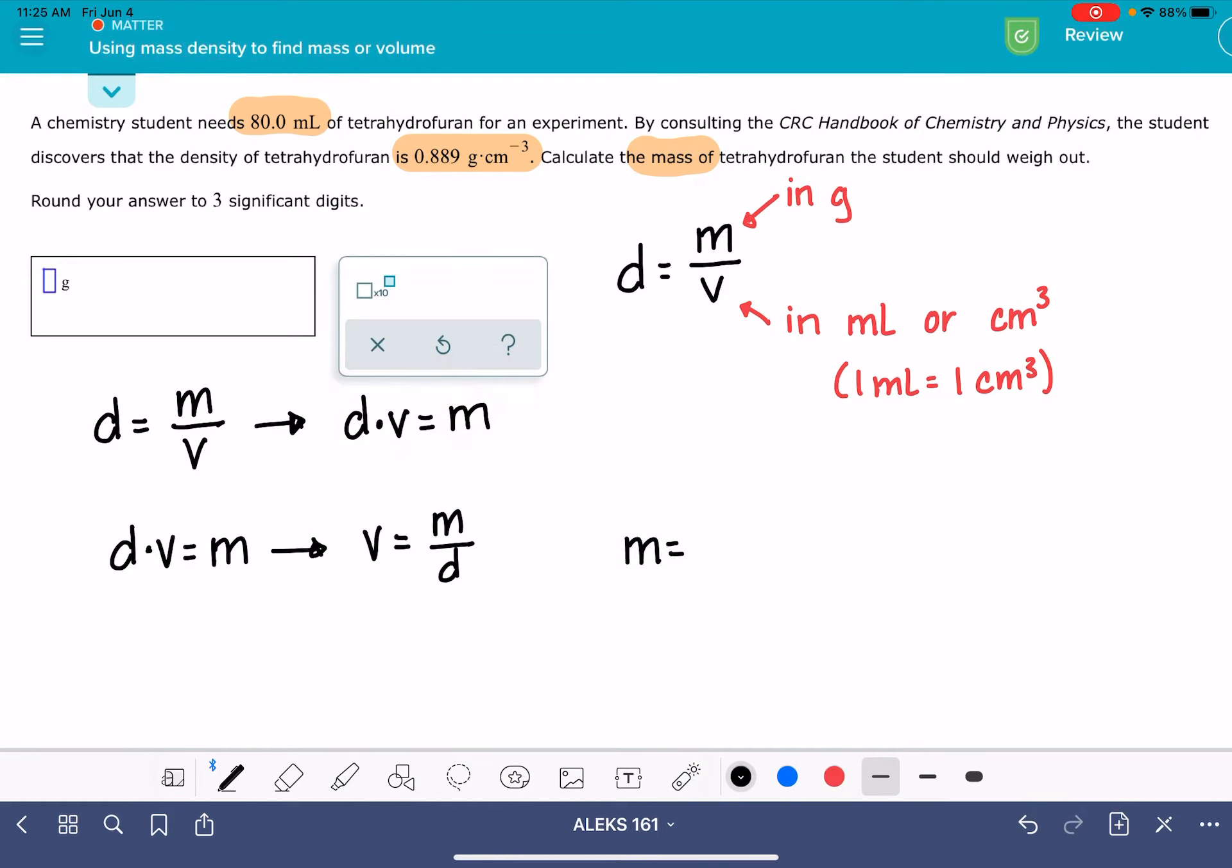The mass is going to be the density times the volume. The density is 0.889 grams per cubic centimeter, and then we're going to multiply that by our volume, which is 80 milliliters.